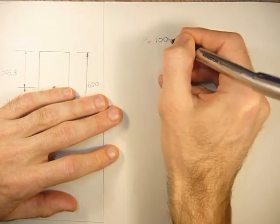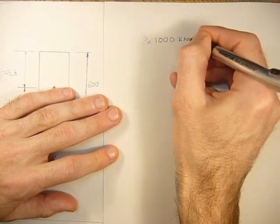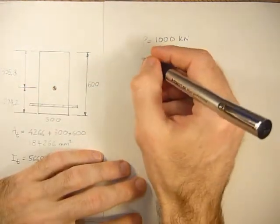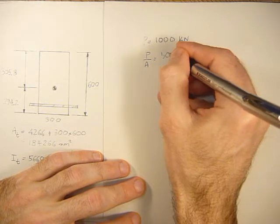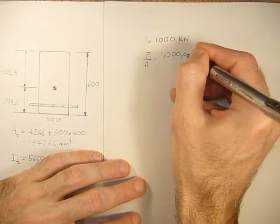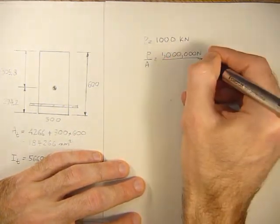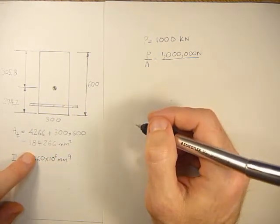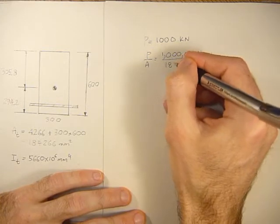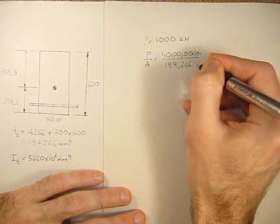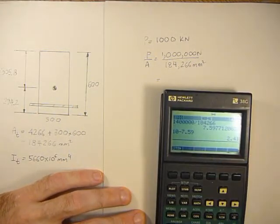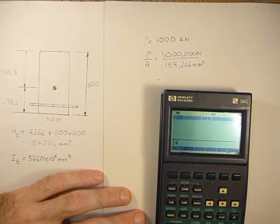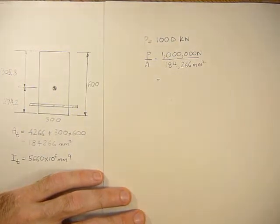The stress would be P over A, which equals a million newtons divided by the area transformed, which is 184,266 millimeters squared. So the stress would be 1e6 divided by 184,266, equals 5.43 MPa.